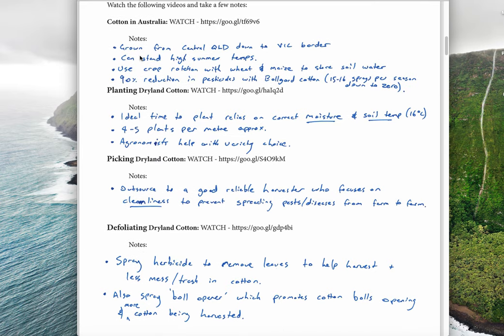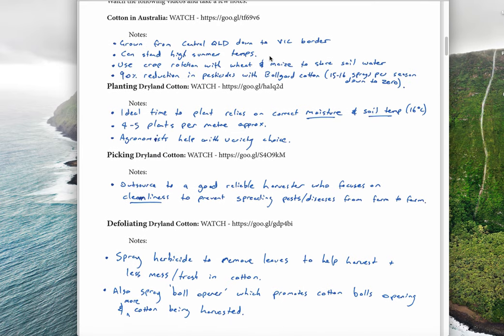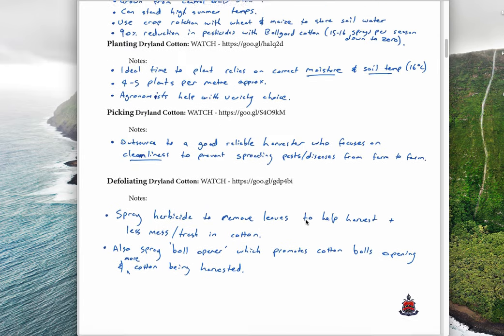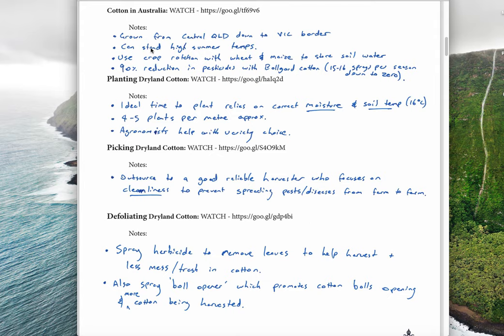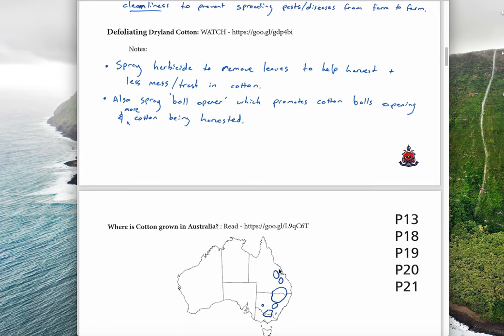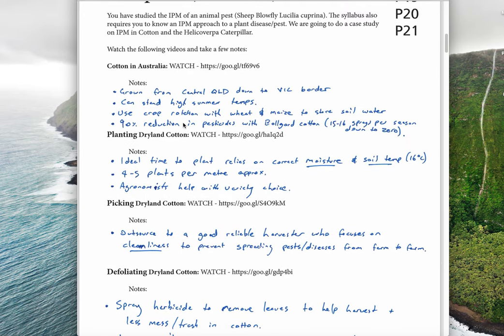If you watch this video, it's really important. It's only pretty short and gives you an idea about cotton. Basically in Australia, we typically grow cotton from central Queensland down to the Victorian border. You can see the map here. These are roughly the areas we grow cotton. You generally need reasonable water, good soils, good deep rich soils and the correct temperature. They can stand a high summer temperature, which is why we see cotton in those places, particularly in Queensland.